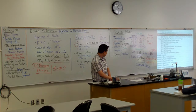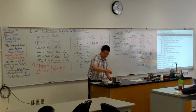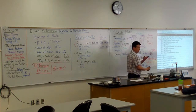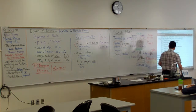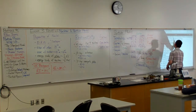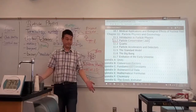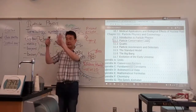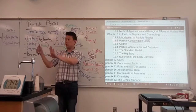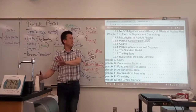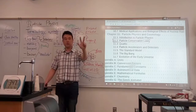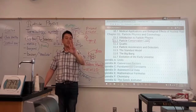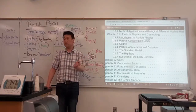One big piece I will test you on is conservation laws. You should know the six absolutely conserved quantities: energy, momentum, angular momentum, electric charge, baryon number, and lepton number. Those are the absolutely conserved quantities — you have to know them.